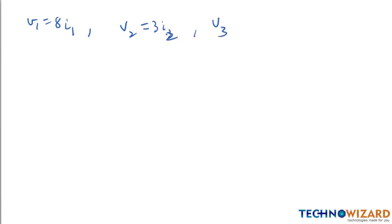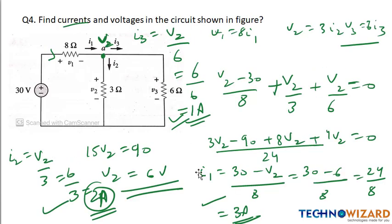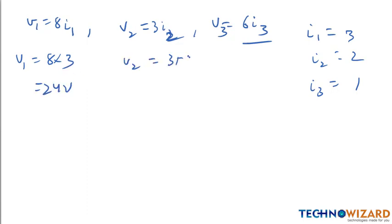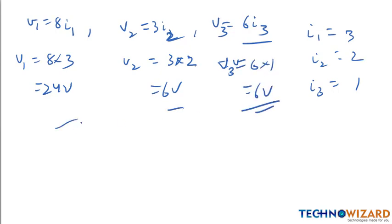Now calculating the voltages: V1 equals 8 times I1 equals 8 into 3 equals 24 volts. V2 equals 3 times I2 equals 3 into 2 equals 6 volts. V3 equals 6 times I3 equals 6 into 1 equals 6 volts. This is how we can calculate voltages as well as currents by applying KCL in the given circuit.